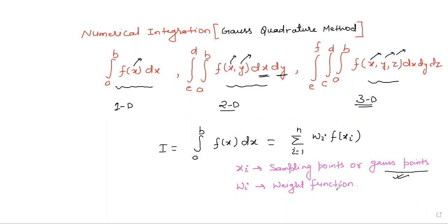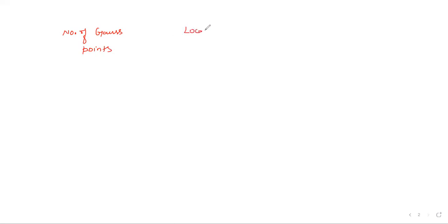They have given a table in which the Gauss points and weight functions are defined. In that table there are three things: number of Gauss points, location of xi (for i equals 1 to n), and weight function wi (also for i equals 1 to n). You need to remember this table.